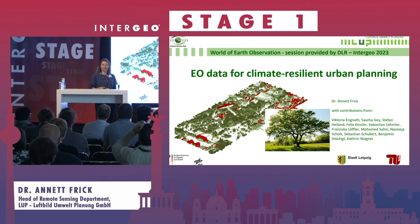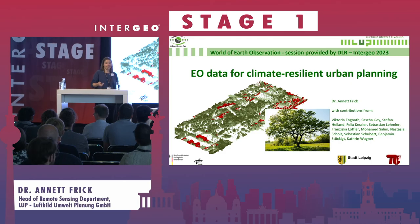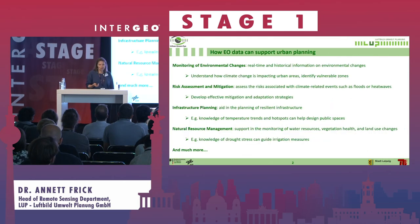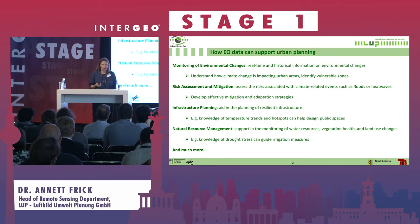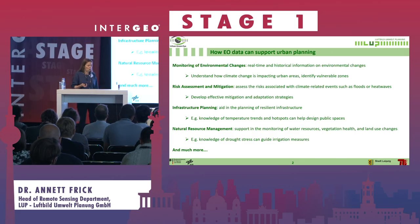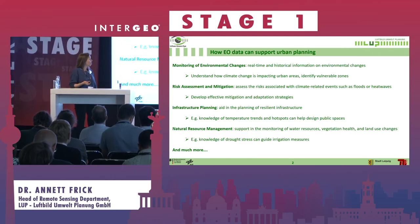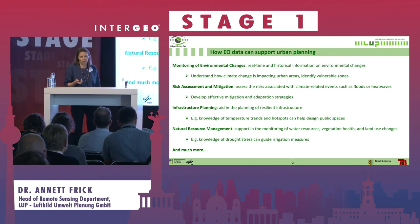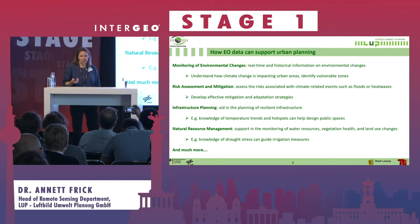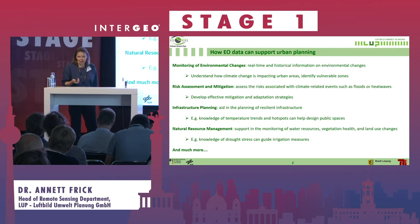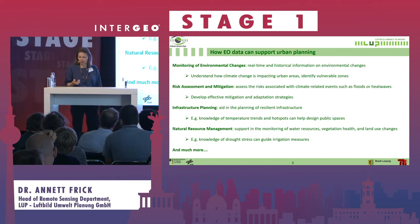I'm glad to present some Earth Observation examples today. Cities face lots of challenges due to climate change. We have difficult tasks to fulfill: we need to monitor change — what is changing, where, and how fast. We need to do risk assessment to better plan mitigation measures, for instance for heat risk assessment. We need better infrastructure planning to build a livable environment, better manage natural resources, and for all this we can use Earth Observation data.